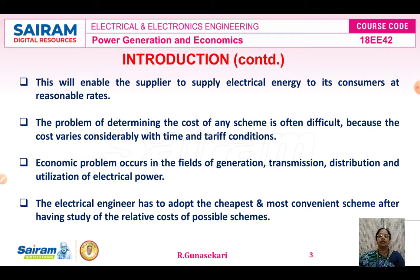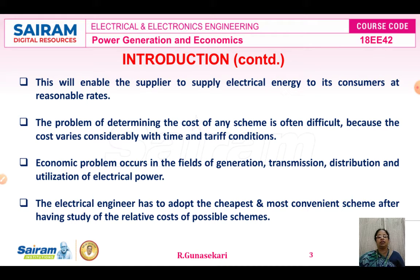How we determine the problem? The problem is determined with the help of the cost of any scheme. The problem of determining the cost is very difficult because the cost varies with time and tariff consideration. Different types of tariff exist. In the next lecture videos, we will study what are the types of tariff. The economic problem occurs in the field of generation, transmission, and distribution.